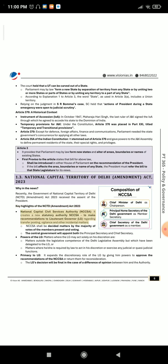National Capital Civil Services Authority (NCCSA): It creates a new statutory authority, NCCSA, to make recommendations to the Lieutenant Governor (LG) regarding transfer, posting, vigilance, and other incidental matters. NCCSA shall decide matters by the majority of votes of the members present and voting. The central government will appoint both the Principal Secretary and Chief Secretary. Powers of the LG: Matters where the LG may act solely on his discretion include matters outside the legislative competence of the Delhi Legislative Assembly but which have been delegated to the LG, or matters where he/she is required by law to act in his discretion or exercise any judicial or quasi-judicial functions.